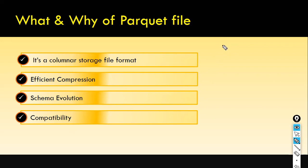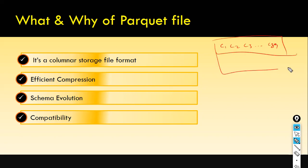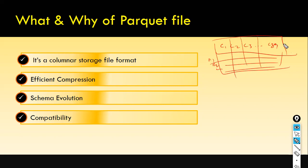Let's say you have column 1, column 2, column 3 — up to 89 columns in a dataset. Usually data gets stored in row-based format: row 1, row 2, row 3. So in this hypothetical table, we have 89 columns.